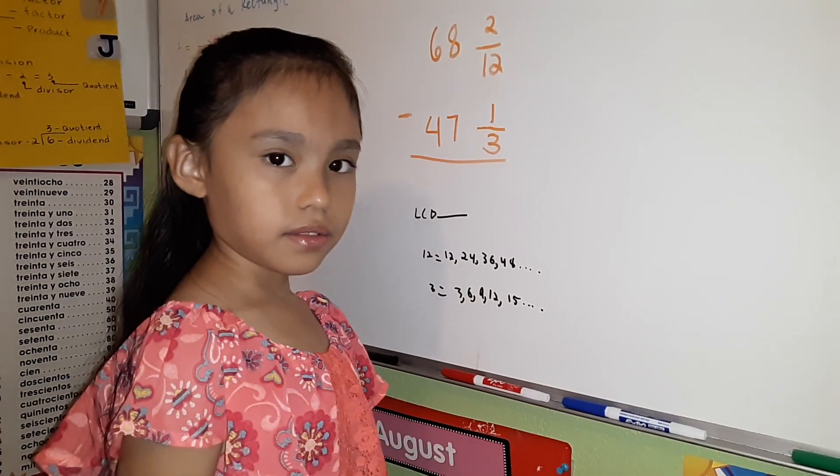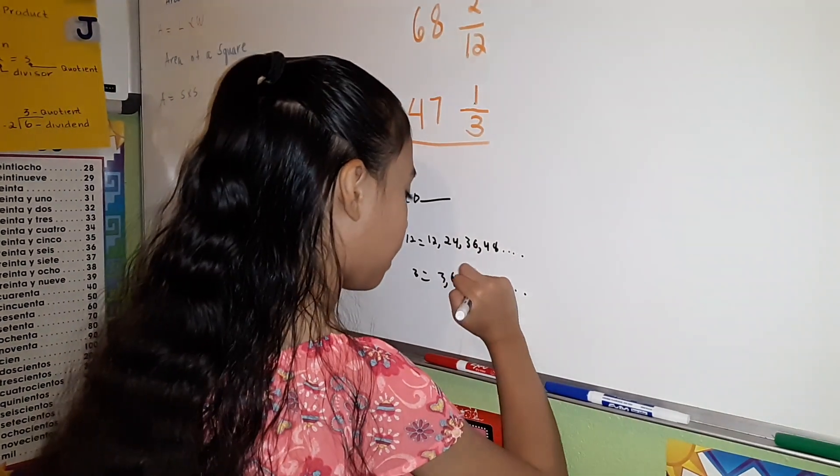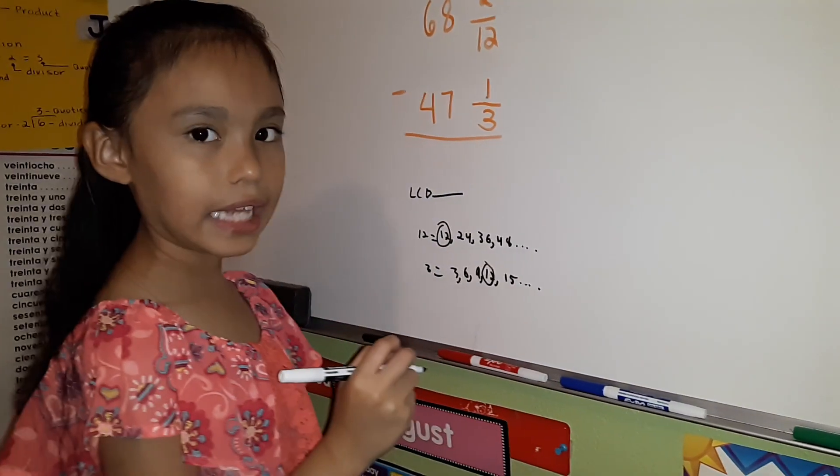First, we're going to circle our least common multiples. 12 and 12. 12 is our LCD.